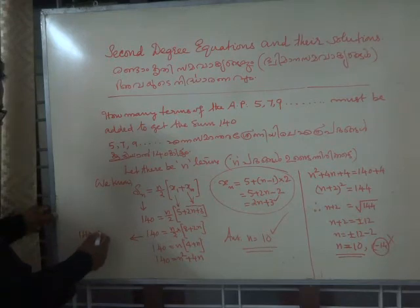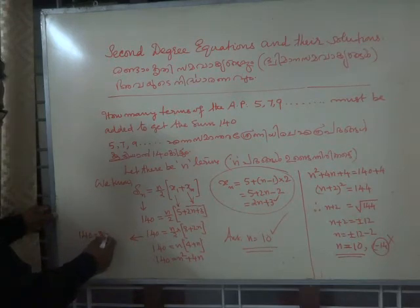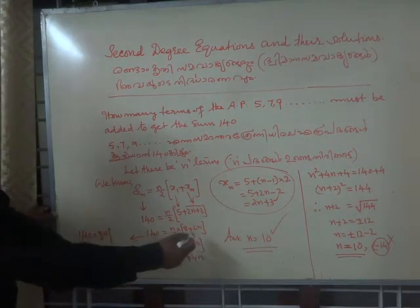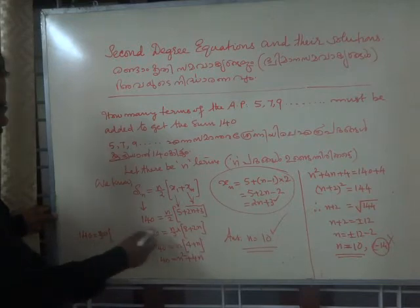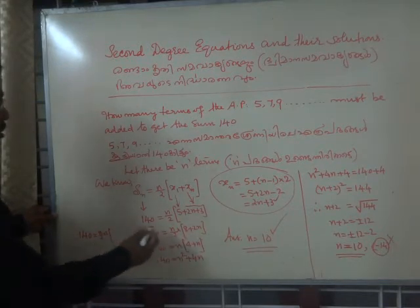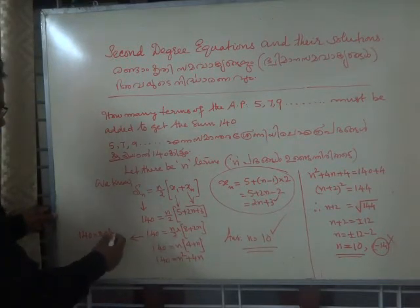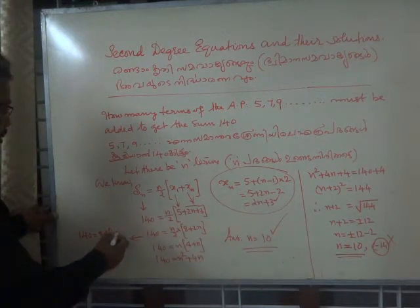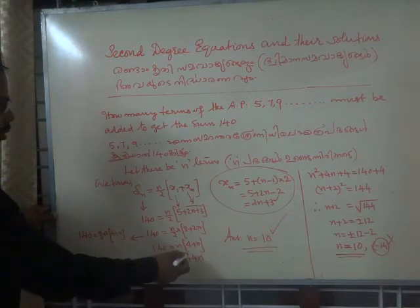140 is equal to n by 2 into, you can take 2 outside the brackets. When it is done, the terms in the bracket will be 4 plus n. That is what is happening here.